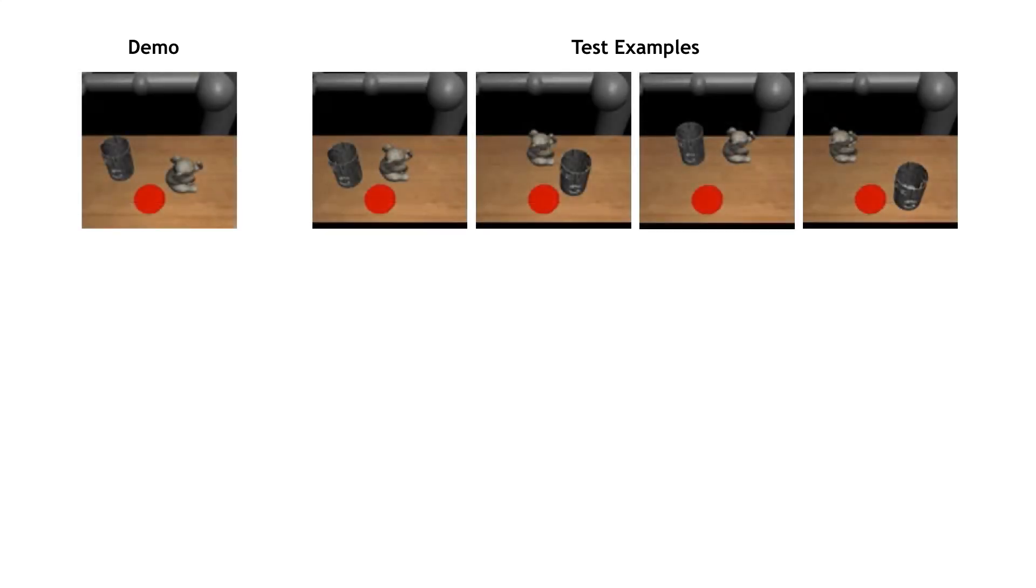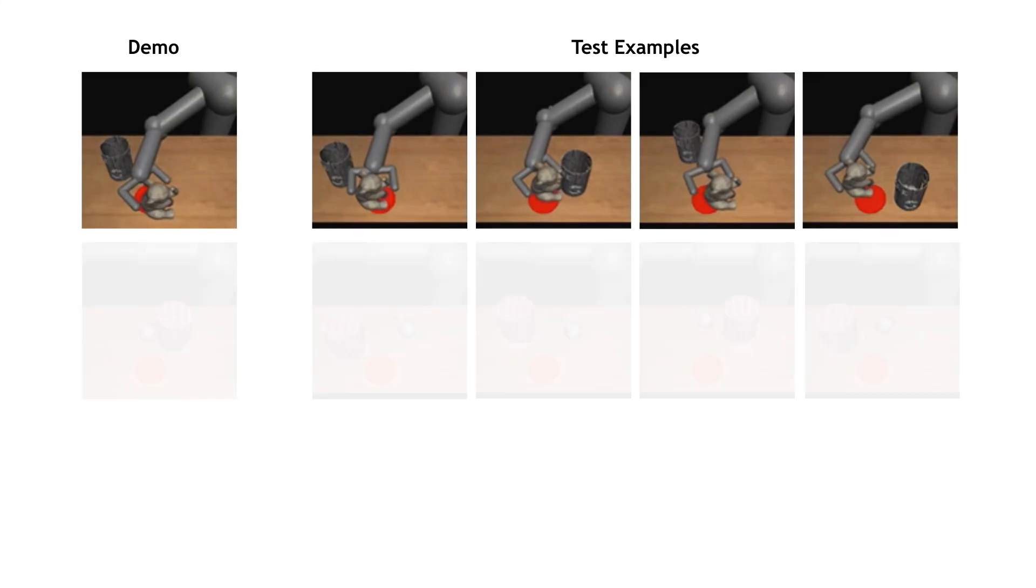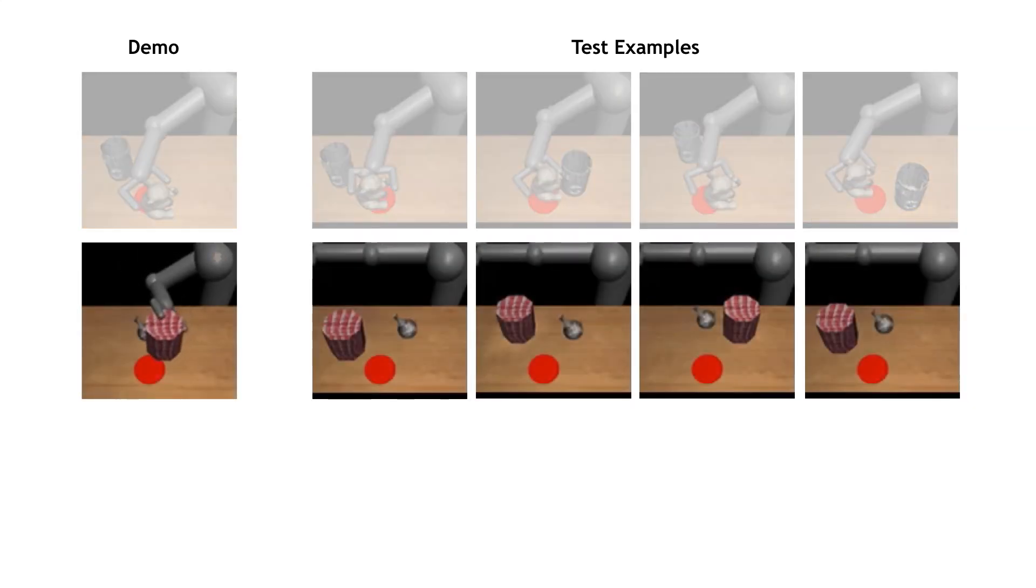The second experimental domain involves a simulated 7 degrees of freedom robot in a 3D environment, where the action space is 7 DOF torque control. The goal is to push a randomly positioned object to the red target in the presence of another randomly positioned distractor.